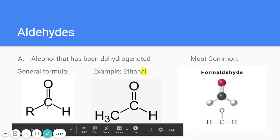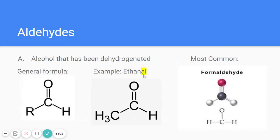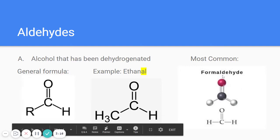In an aldehyde, the double-bonded oxygen is on the last carbon, attached to another carbon and a hydrogen — it's an end carbon. You can tell from the picture: if the double-bonded oxygen is on the very last carbon, it's an aldehyde. If the name ends in '-al', it's also an aldehyde. The most common aldehyde is formaldehyde — you should know the name and the structure. It has only one carbon; it's the smallest aldehyde.